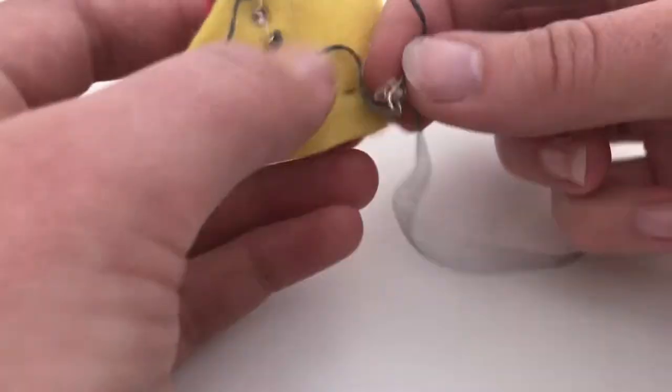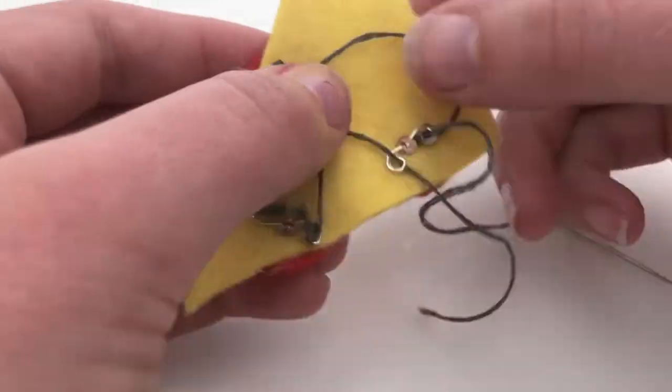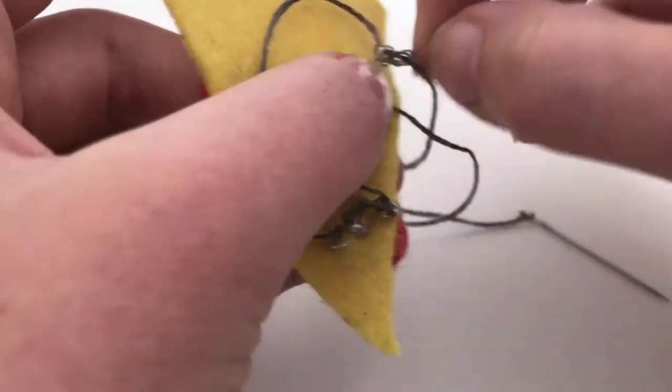Now that the circuit is done, you can position the LEDs back in the pizza. Arrange the thread so that there are no crossed wires. Now you can tighten the thread to the correct length between the LEDs.